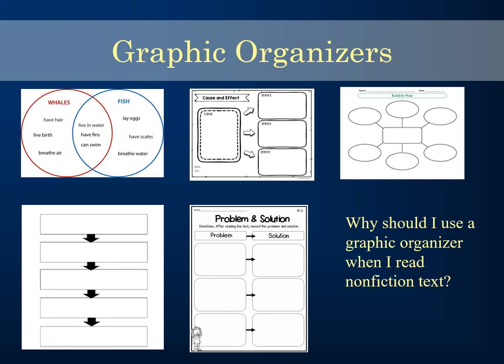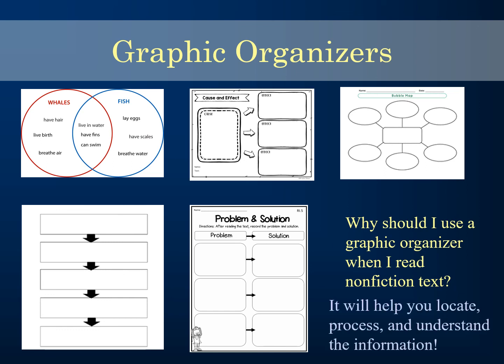As you're reading, it's good to take notes on a graphic organizer. You can draw one on your own notebook paper to help you find the information you need. For description, your main idea goes at the top with details below. You can also use a cause and effect chart, a Venn diagram for compare and contrast, arrows for time order or sequence, and a problem and solution box. Drawing these can help you locate, process, and understand the information you're reading.